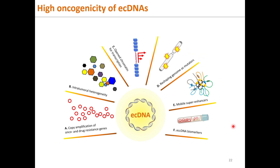To recap, ECCDNAs can confer high oncogenicity by way of: a) amplification of cargo oncogenes or drug-resistant genes; b) intratumoral heterogeneity due to uneven segregation and growth selection; c) open chromatin for active gene transcription and expression; d) reshaping the cancer genome as mutators; e) acting as mobile regulatory elements such as super-enhancers; and f) serving as prominent and early cancer markers — ECDNA can indicate poor cancer prognosis and clinical outcomes.